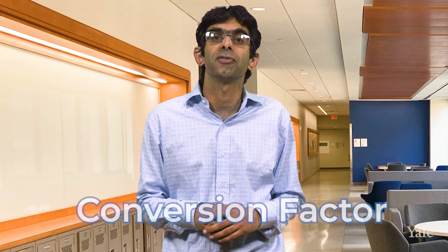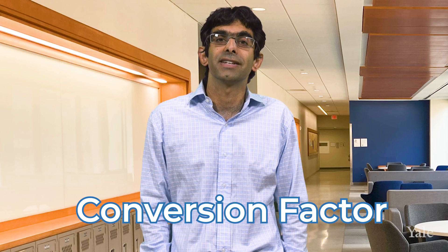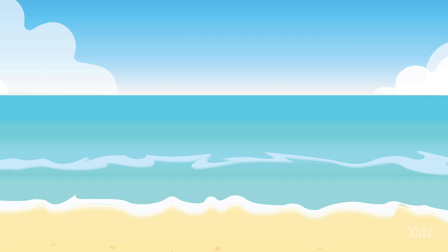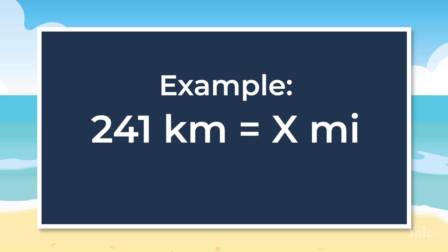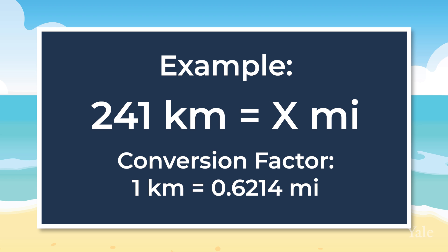So how do we convert from one unit to another? First, we need to know what the conversion factor is. We can look this up online or in a textbook. Let's do an example. If I travel 241 kilometres to get to the beach, how far is that in miles? The conversion factor tells us that one kilometre equals 0.6214 miles.